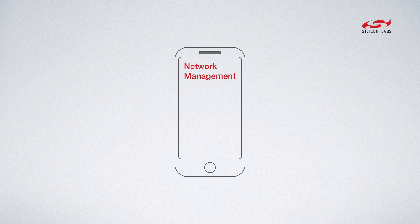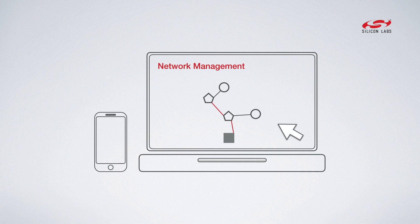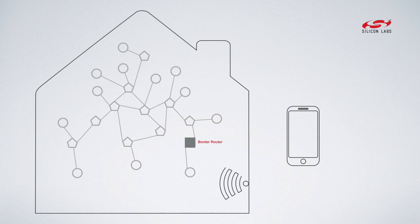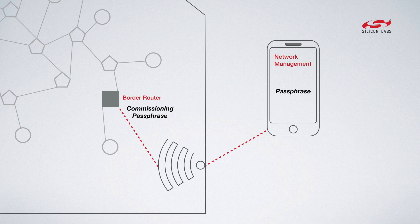Network management also needs to be secure. A Thread network management application can be run on any internet device. If that device is not itself a member of the Thread network, it must first establish a secure TLS connection with a Thread border router. Every network has a management passphrase that is used for this.